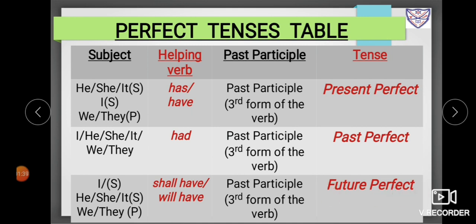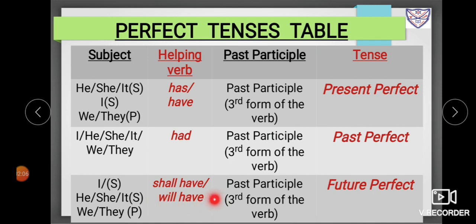For future perfect tense, when 'I' is used as a subject we use 'shall have' as a helping verb. When 'he', 'she', and 'it' are used as subjects, we use 'will have'. With 'we' and 'they', which stand for plural number, we also use 'will have'. So to get future perfect tense, we add 'shall have' or 'will have' before the past participle, or the third form of the verb.